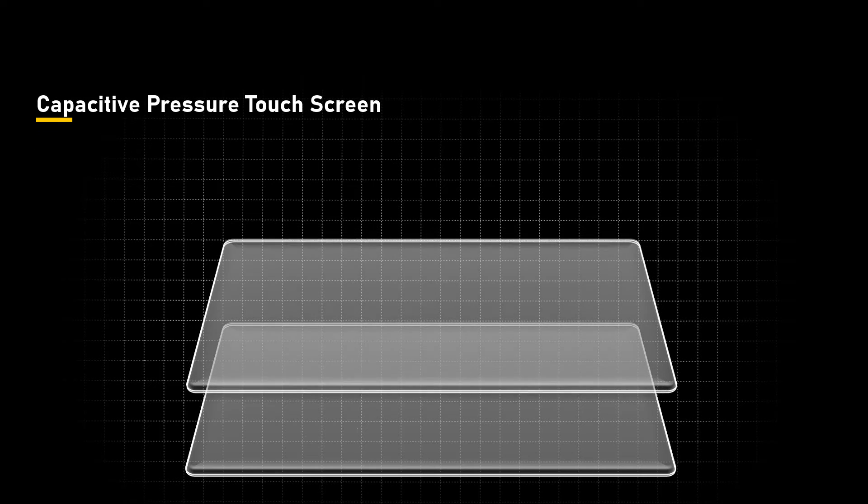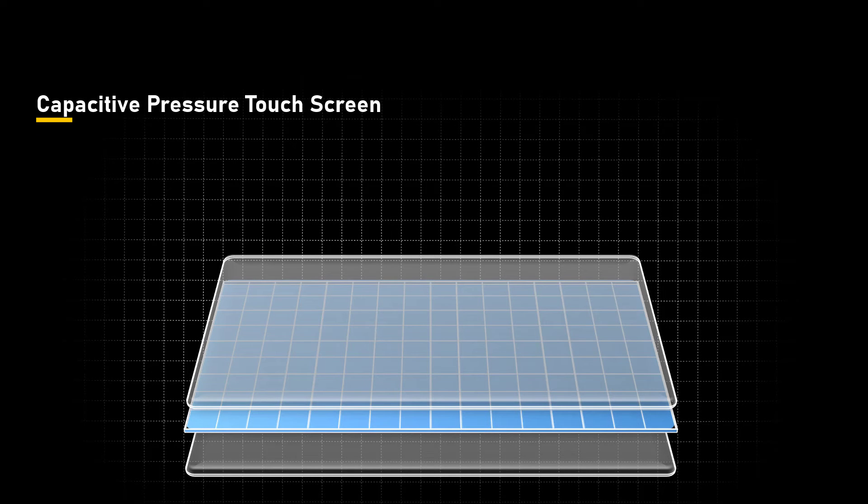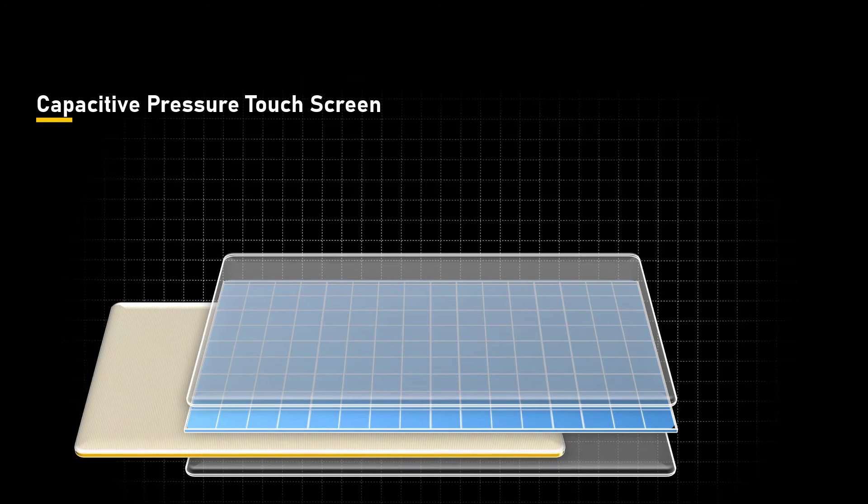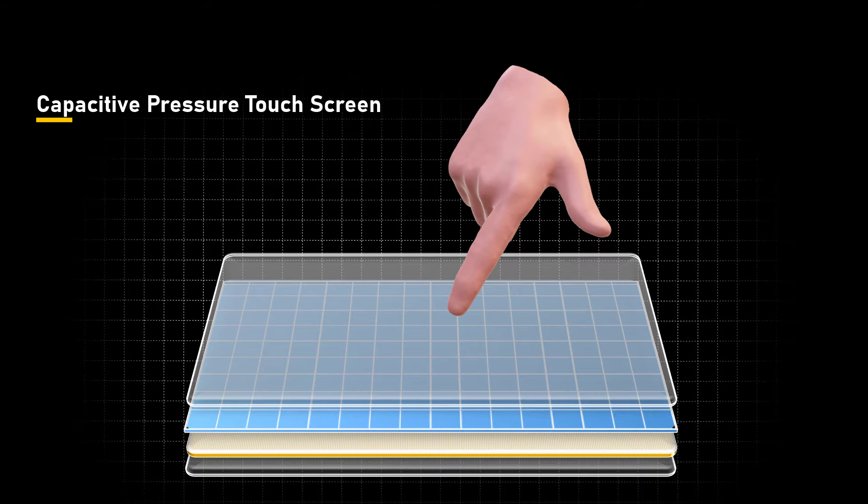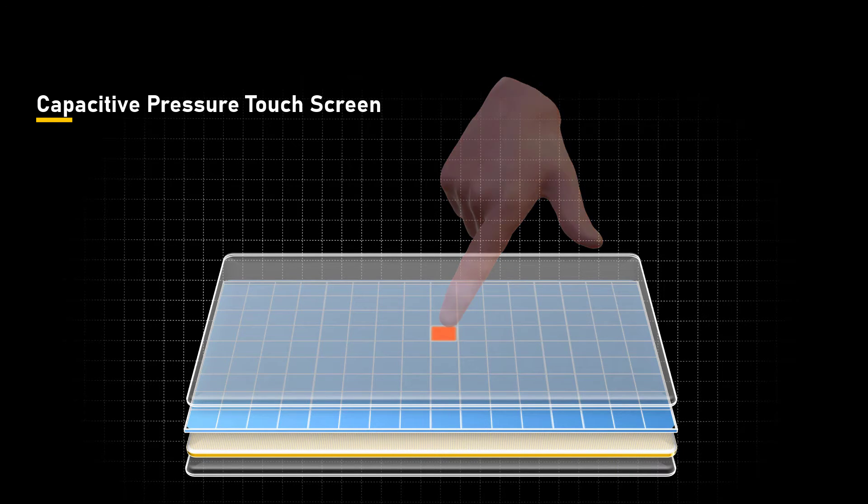The capacitive pressure sensing touchscreen utilizes similar underlying technology as capacitive touchscreens, but incorporates an additional layer of pressure-sensitive elements. When pressure is applied, the capacitance of the touchscreen gets altered at the location, and the touch controller detects and measures this change to determine the pressure level.